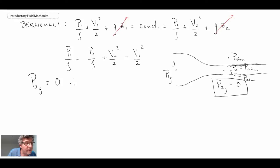What we're going to pull into the problem is that P2 gauge equals zero. Consequently, if we look at P1 minus P2, the difference between P1 and P2 is then going to be P1 gauge. We can take this and plug it into our Bernoulli equation.